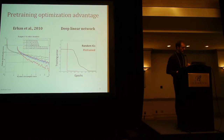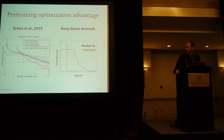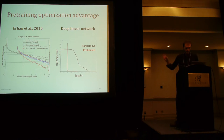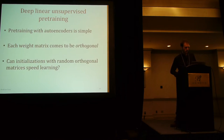You may have anticipated the answer. One suggestion from this work is that maybe pre-training is helping you find these conditions. Here's an example comparing non-linear nets to deep linear networks — we see a pre-training optimization advantage in both cases. So maybe pre-training is a good way to find these fast decoupled initial conditions.